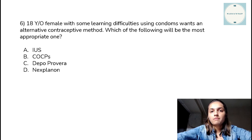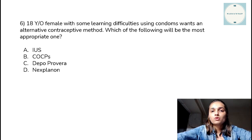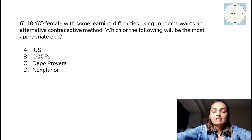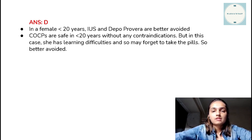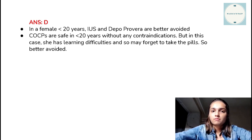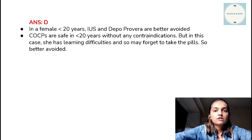Last question: an 18-year-old female with learning difficulties is currently using condoms and wishes for an alternative contraceptive. She is less than 20 years old — this rules out the intrauterine system and Depo-Provera, as Depo-Provera increases the risk of osteoporosis and she may be nulliparous. She has learning difficulties, so we would not prescribe any pills as she might forget to take them regularly. The answer is Nexplanon.